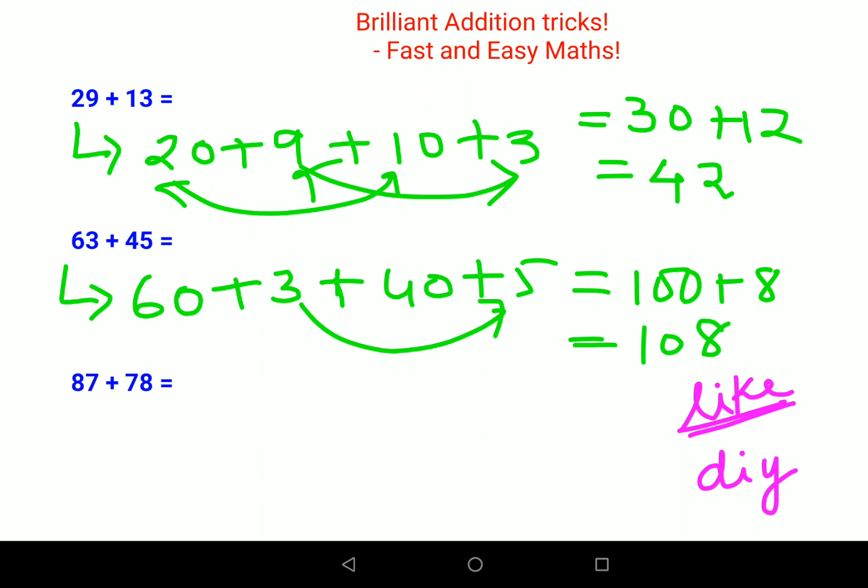Now I'm not going to do this breaking, let's try to do this orally. We have 87 and 78, so 80 plus 70 gets you 150, plus 7 plus 8 gets you 15, so final answer is 165. You saw how easily we could do this.